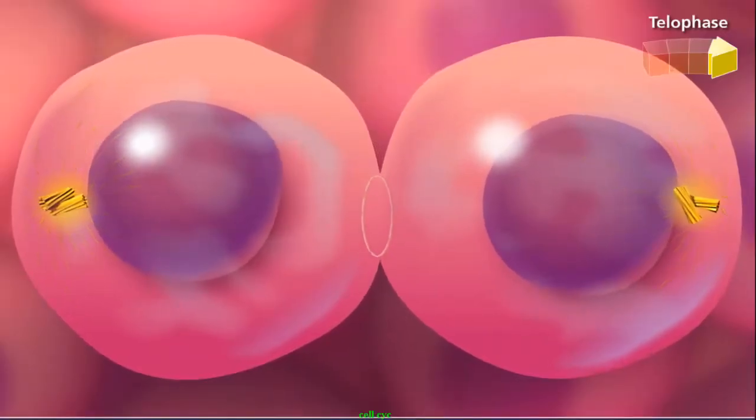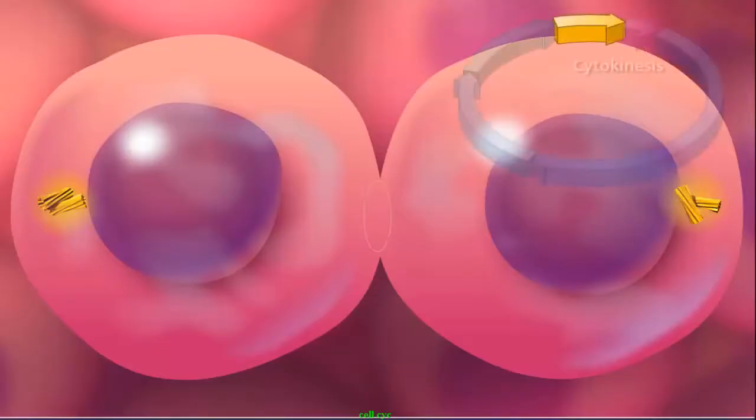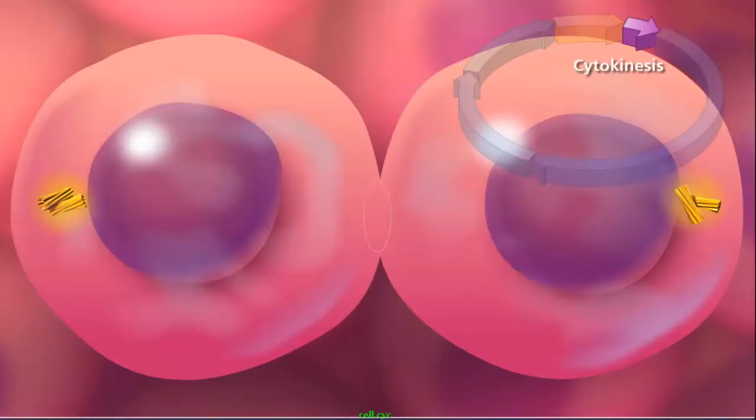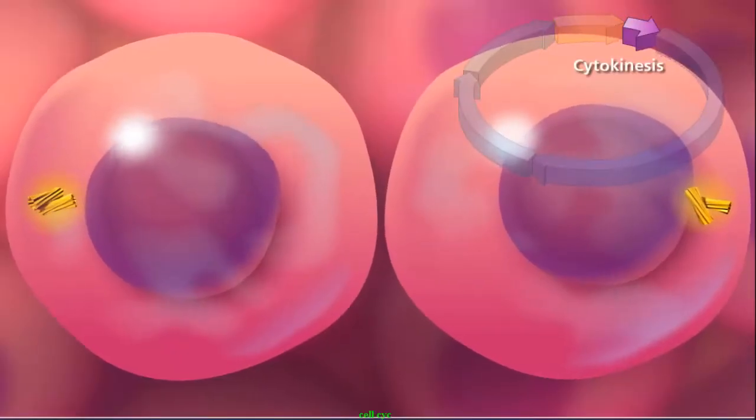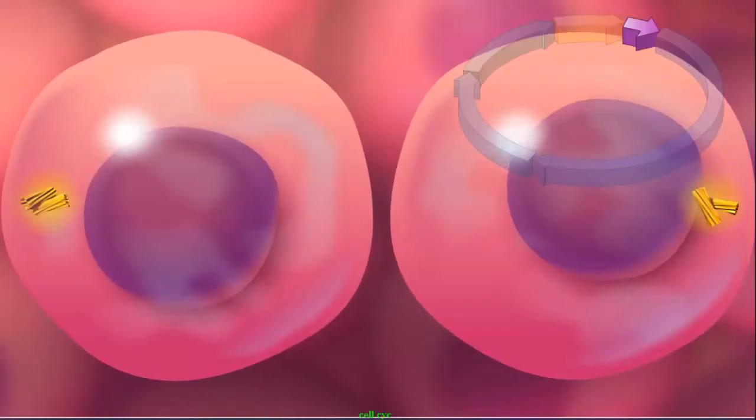The spindle apparatus disassembles as the microtubules are broken down into tubulin monomers that can be used to form the cytoskeleton of the daughter cells. In animal cells, cytokinesis completes cell division by extending the cleavage furrow to completely separate the newly formed daughter cells.